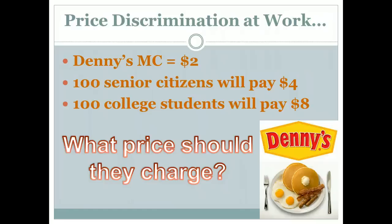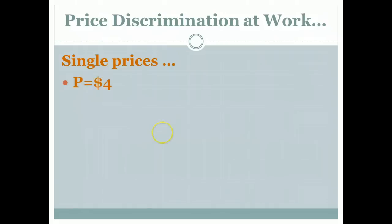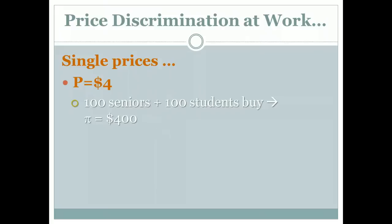There are a couple of different ways they could approach this. They could be a single price monopolist and choose to charge $4 for meals. If they do that, they'll end up with a profit of $400, because they've got 200 people buying meals at $4 apiece — that's $800 in revenue. Every meal has a marginal cost of $2, so they've got $400 worth of costs, leaving a profit of $400.